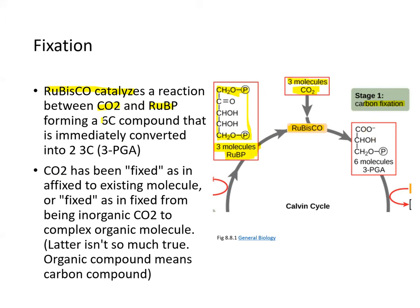Once you do that, you produce a six-carbon compound that is immediately converted into two three-carbon compounds, or 3-PGA. Carbon has been fixed because it has been converted from inorganic CO2 into a complex organic molecule.